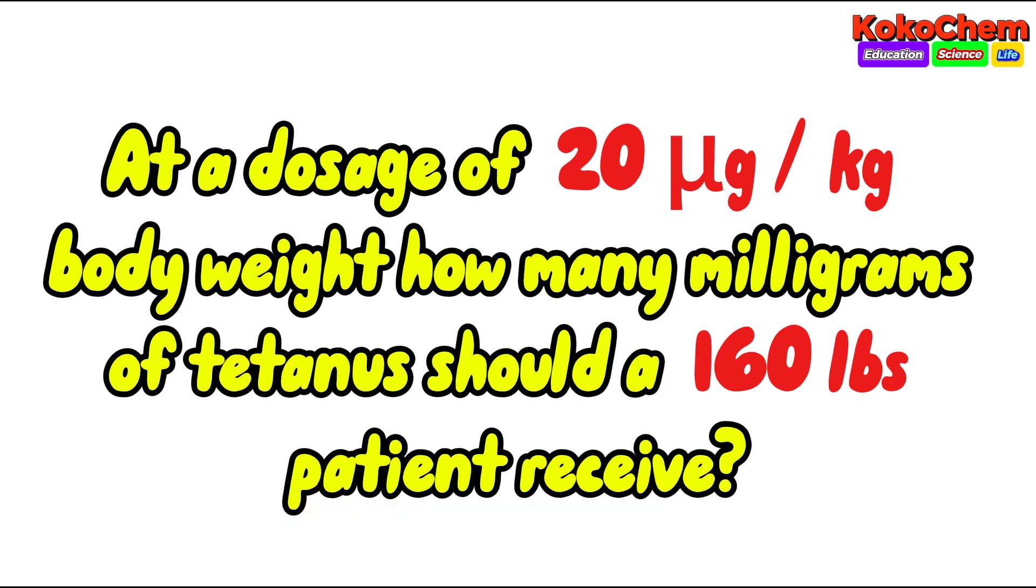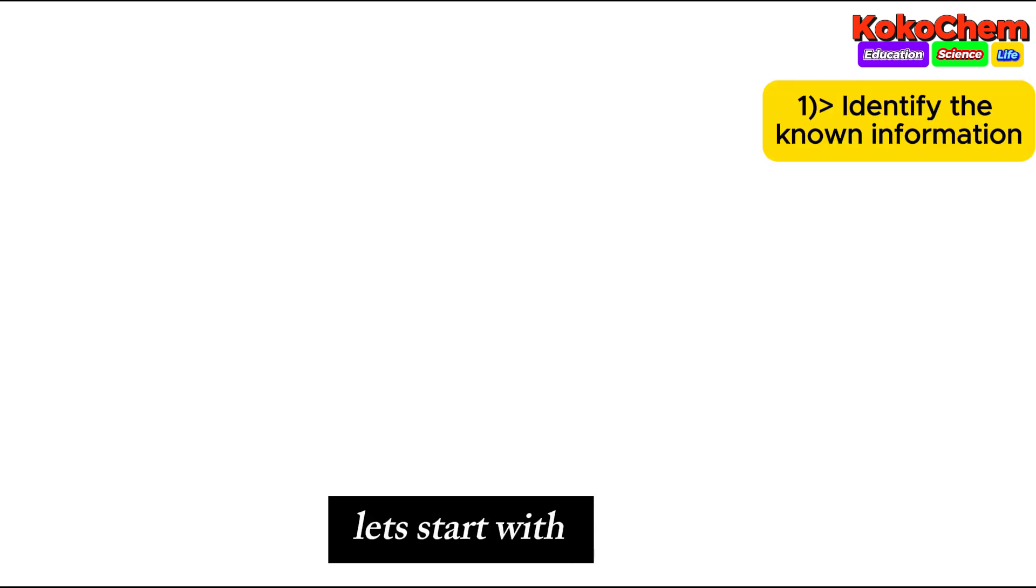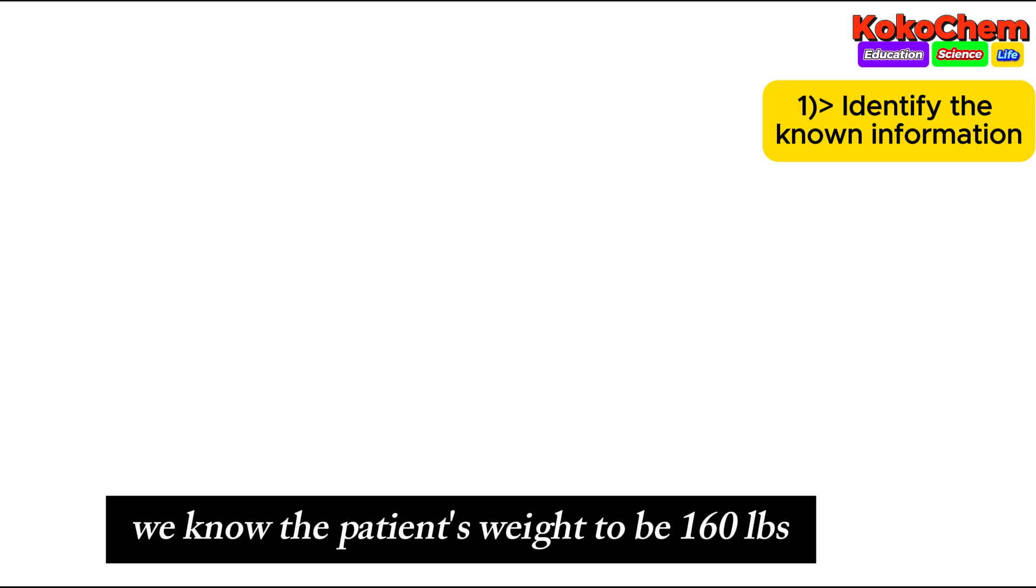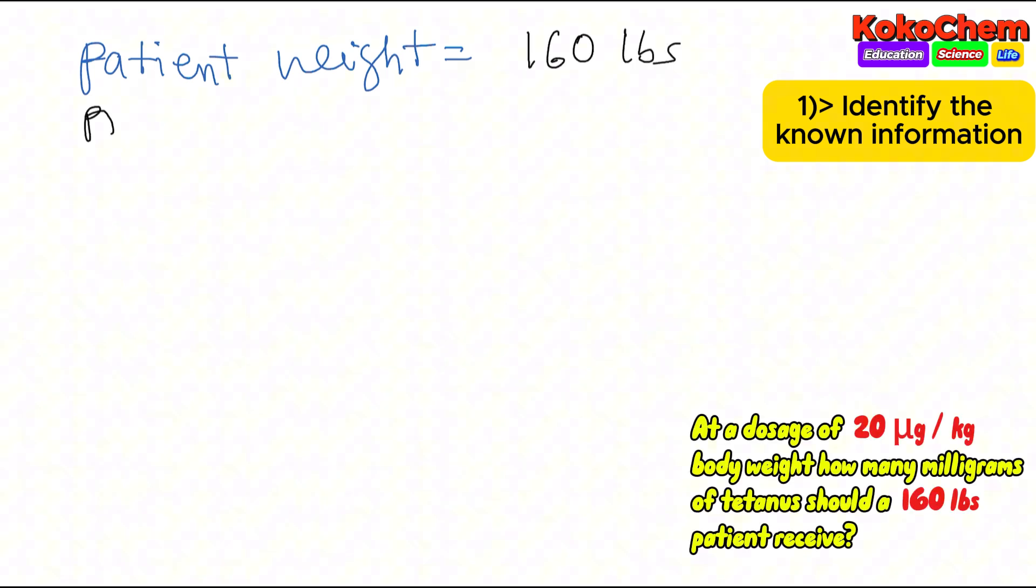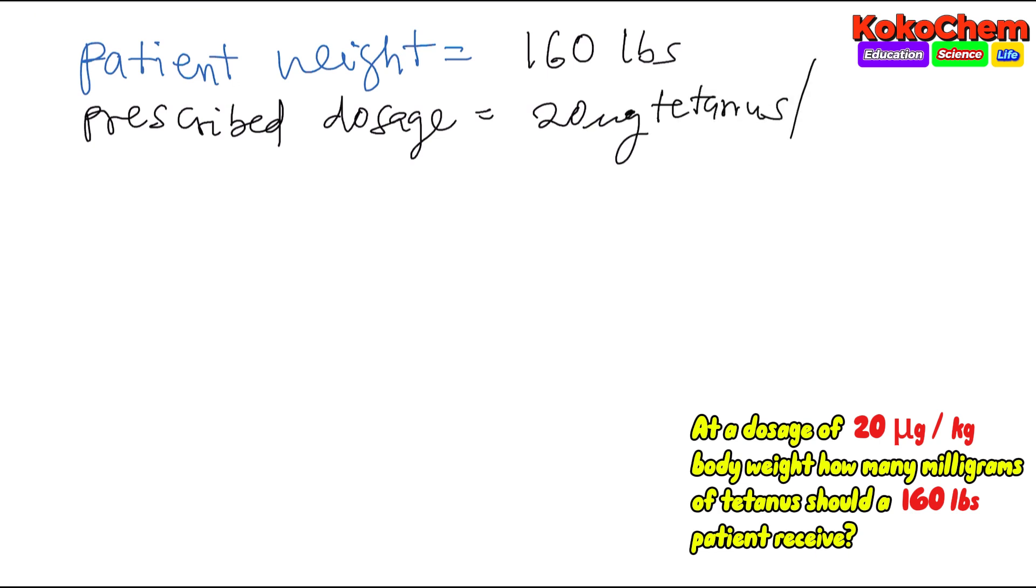The recommended dosage is in microgram per kilogram, so knowing this data we can calculate the appropriate amount of tetanus. Start by identifying the information in the question: patient weight is 160 pounds, prescribed dosage is 20 microgram tetanus per kilogram body weight.